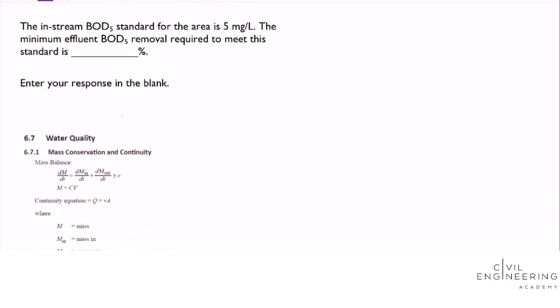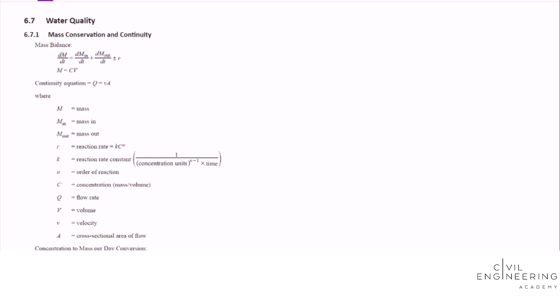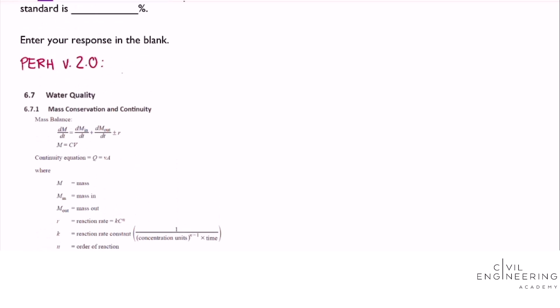To start off we're going to be looking at the PE reference handbook version 2.0 at the time of this video, and this is section 6.7.1 mass conservation and continuity. I just took a screenshot of that section and provided it here. We're going to use this continuity equation, specifically this one. If we know that the mass is consistent throughout the system we can use this equation to set one side equal to the other.